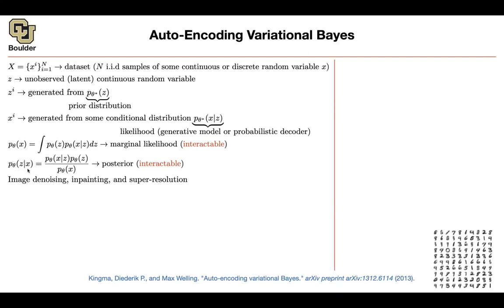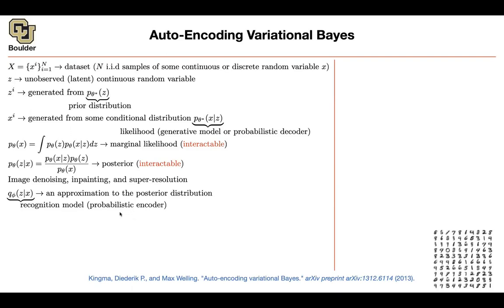Whenever you don't know something, you approximate it. So let's approximate the posterior with a distribution Q of phi. It takes your input images and encodes them — Z becomes an encoded version of X. This is your encoder, and you can think of it as a probabilistic encoder because it is a distribution and an approximation to your posterior. We replace the true posterior P with Q, which has its own parameters phi, approximated by a neural network. So there is one neural network for the encoder and another for the decoder.